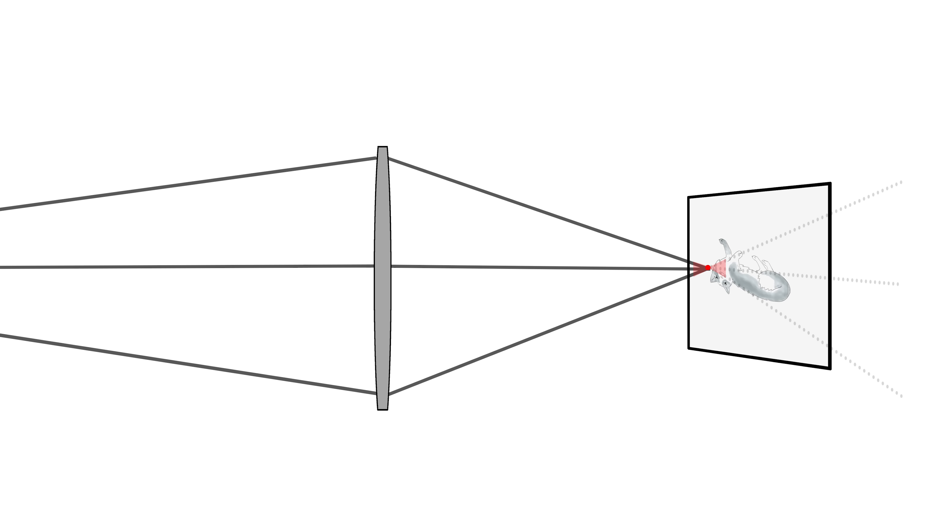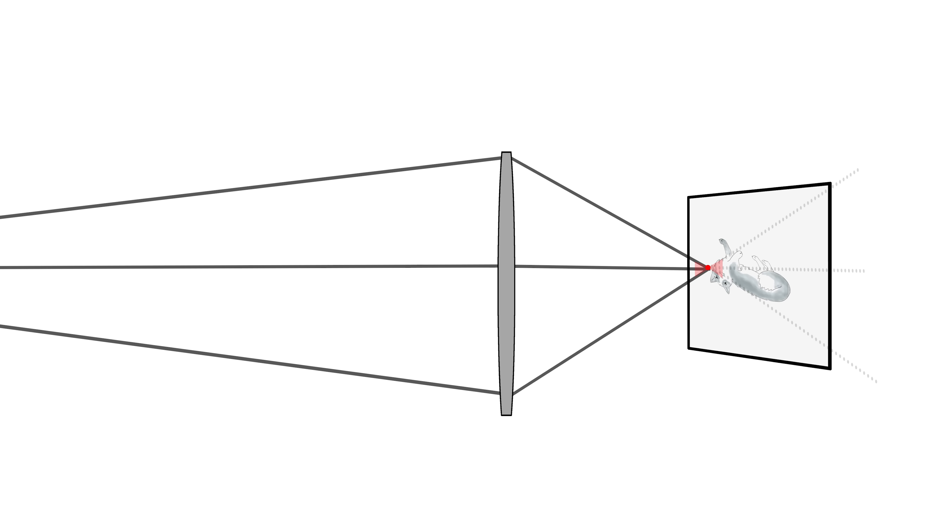Changing your lens's focal length will also have an effect. In this example, I'm going to take the first shot at 70mm at f2.8. Then without moving back at all, I'm going to zoom in and shoot at 200mm at f2.8 as well. You'll notice that with the longer lens, we will be creating a shallower depth of field.